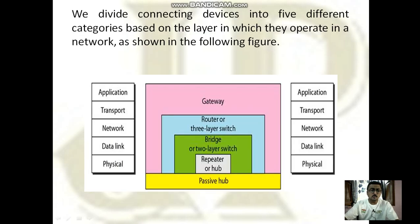This diagram depicts very well how and which connecting devices are needed at which level. These are the five layers of the TCP/IP model: physical layer, data link layer, network layer, transport layer, and application layer. And these are the basic connecting devices needed to communicate.